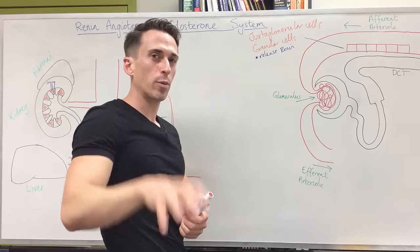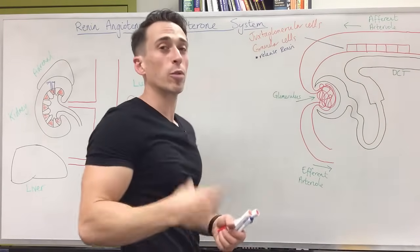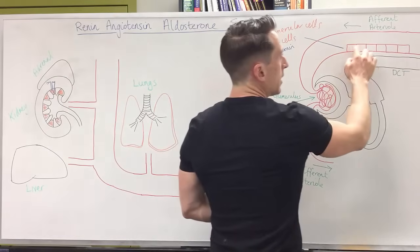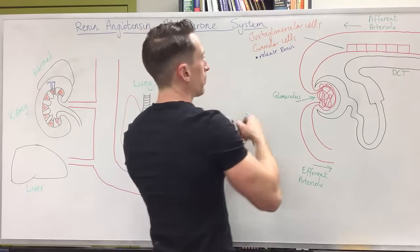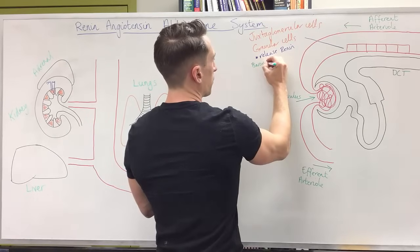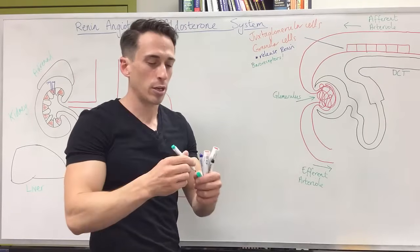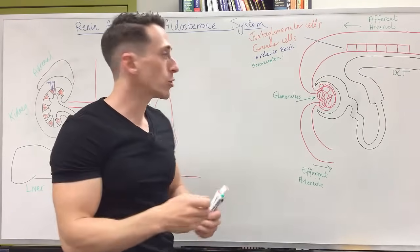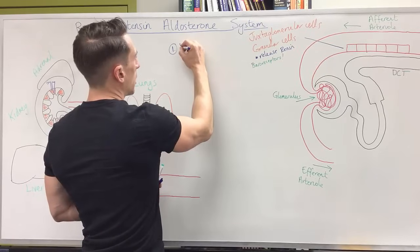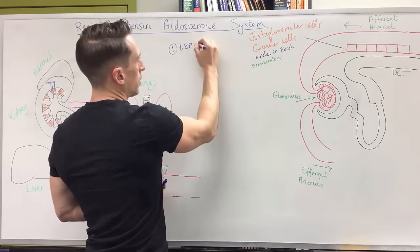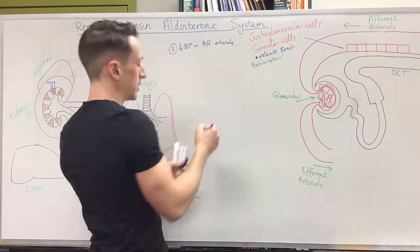What stimulates renin's release? A drop in blood volume and a drop in blood pressure. How does the cell know this? The juxtaglomerular or granular cells are actually baroreceptors — they pick up that drop in blood pressure and then release renin. So the first way renin is released is a drop in blood pressure in the afferent arteriole.